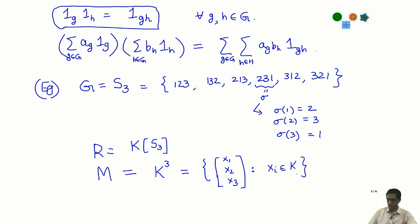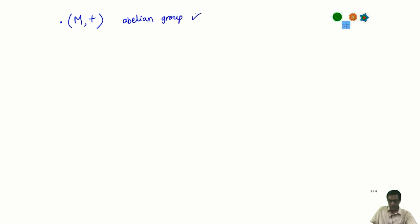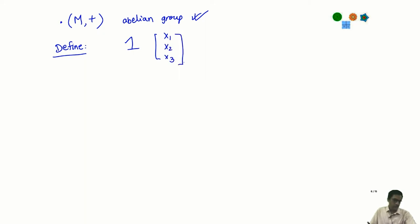I claim that M can be made into an R-module. M already has an addition — it is a vector space over K, hence an abelian group. It is only the scalar multiplication that we have to define. For a start, let me tell you how to scalar multiply by a basis element 1_σ for each σ in S_3.